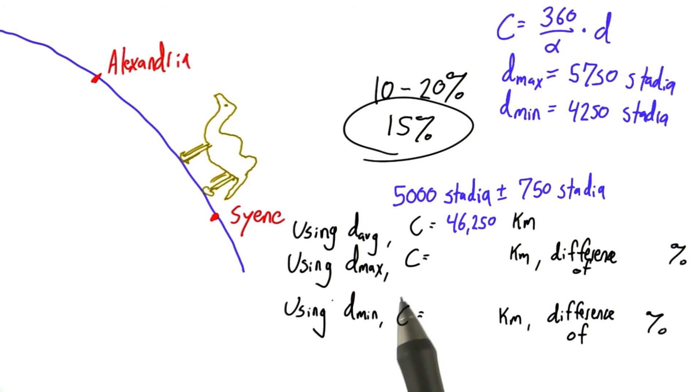Now, I want you to fill in these blanks. What is the circumference if we use d max? So, that would be 5,000 plus 750 stadia. And once you've calculated that, how far off percentage-wise is that from 46,250?